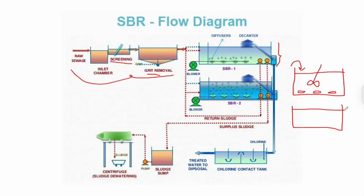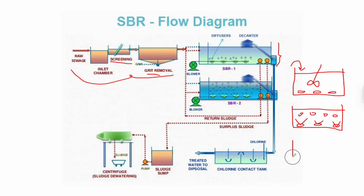The second stage is aeration. Using the same diffusers already in the tank, aeration begins, promoting the proliferation of beneficial bacteria. These bacteria form flocs within the wastewater. In stage three, aeration is stopped and the flocs are allowed to settle down by gravity.